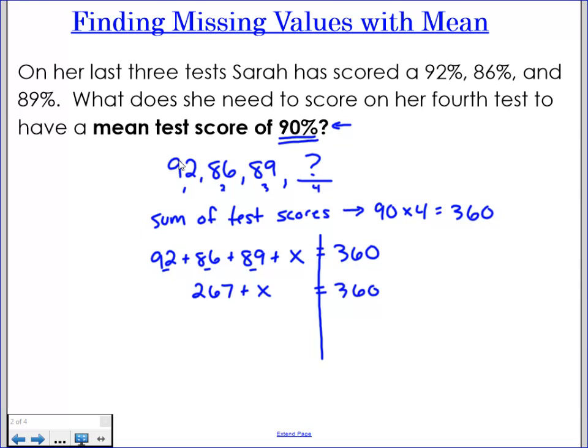And then this is just a nice simple one-step equation. I would subtract 267 from both sides. That would give me my final answer for x and x would equal in this case 93.